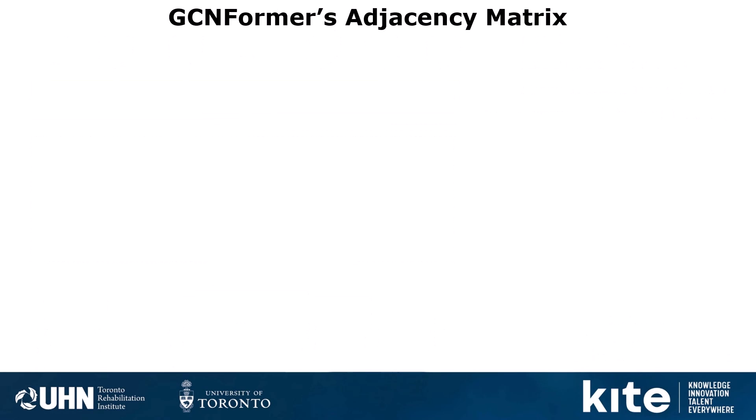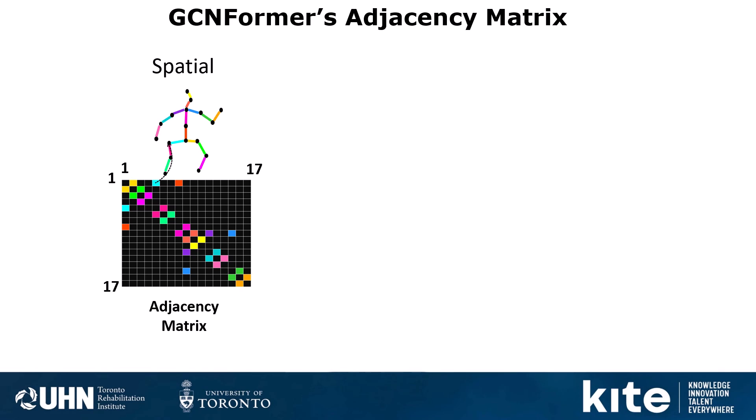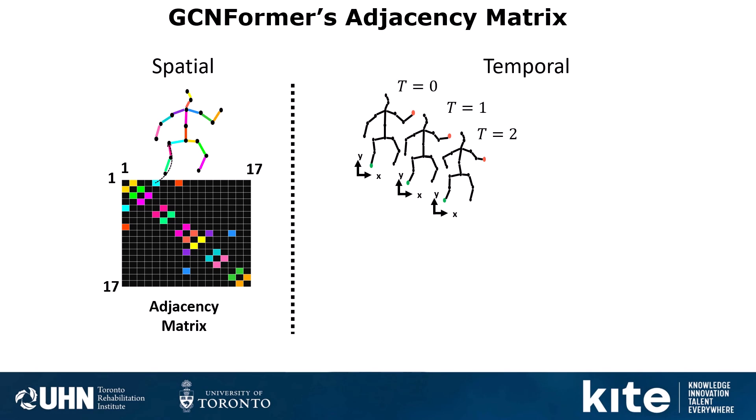What remains is how the adjacency matrices in GCNFormers — both Spatial and Temporal — are constructed. For the Spatial GCNFormer, the adjacency matrix is constructed based on physically connected edges, like the elbow always connected to shoulder and wrist, or the knee always connected to hip and ankle. We also tried other types of adjacency matrices like the way CTR-GCN uses them, but a simple adjacency matrix worked best. For the Temporal GCNFormer, we need to connect a single joint over different time frames. A naive solution is to connect a joint to itself in the previous and next frames.